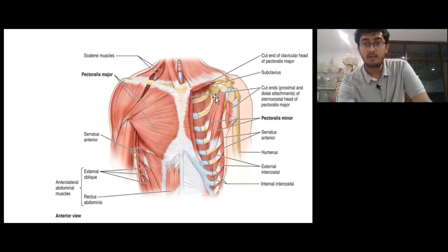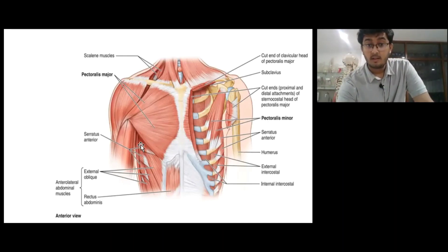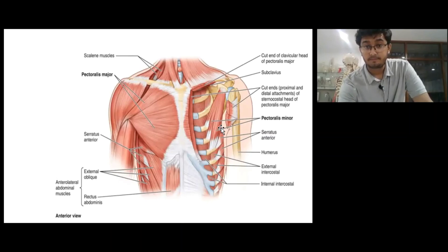Up till now we have actually done four muscles. We have the pectoralis major, the pectoralis minor, the subclavius, and this is the serratus anterior, which you can see here.